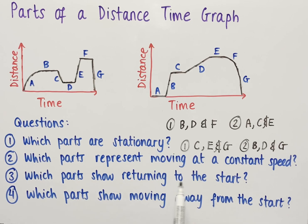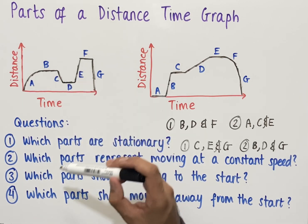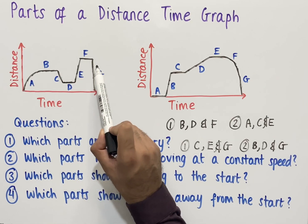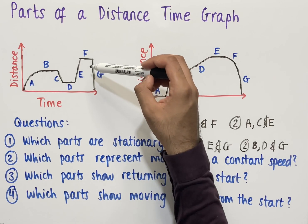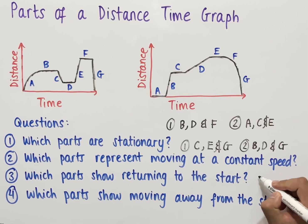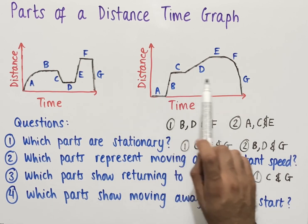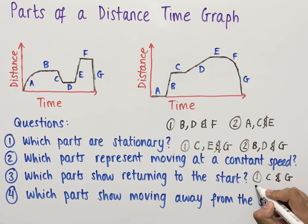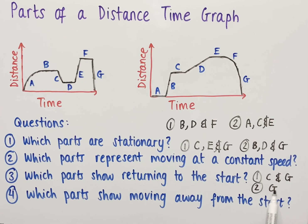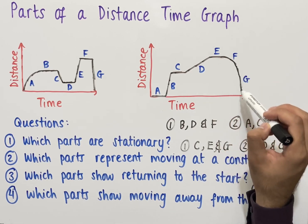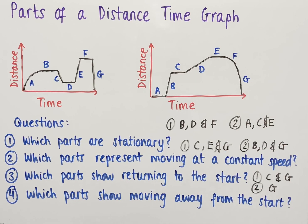The third question asks which parts show returning to the start. Returning to the start is where diagonal lines go back towards the x-axis. In the first graph, part c is a diagonal straight line going towards the x-axis, and part g is also a diagonal straight line going towards the x-axis — so for graph one the answers are c and g. For the second graph, part g satisfies this, and part f also represents returning to the start since the curve is moving back towards the x-axis. So for graph two the answers are f and g.